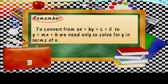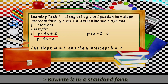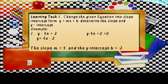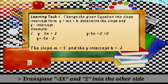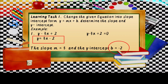Remember: to convert from AX plus BY plus C equals 0 to Y equals MX plus B, we need only to solve for Y in terms of X. Now let us try Learning Task number 1. Change the given equation into slope-intercept form Y equals MX plus B, then determine the slope and the Y-intercept. Example number 1: Y minus 3X plus 2, rewritten in standard form as Y minus 3X plus 2 equals 0. Transpose negative 3X and positive 2 to the other side — negative 3X becomes positive 3X, and positive 2 becomes negative 2. So the answer is Y equals 3X minus 2. The slope M equals positive 3, and the Y-intercept equals negative 2.